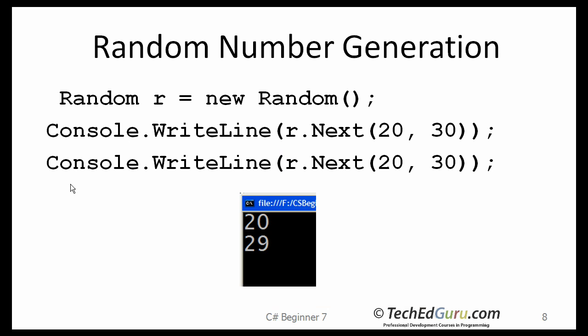Let us take a side trip here. Here is a class called the random class in C-sharp, which can be used for generating random numbers. And without getting into a lot of details here, here is the recipe for doing it. You create a random object r, which is of the type random class. And then, the next method for the random class takes two arguments, two integers.